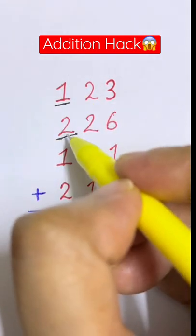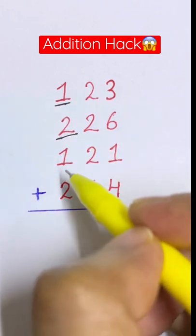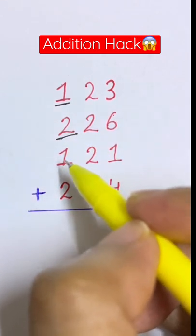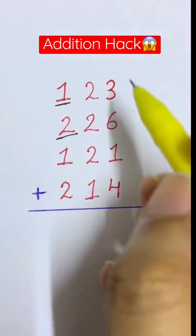What's 100 plus 200? 300. Plus another 100? 400. Plus 200 more? 600. Okay, let's go to the top of the next column, which is tens.